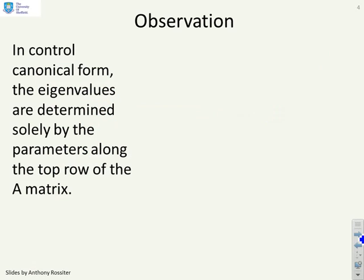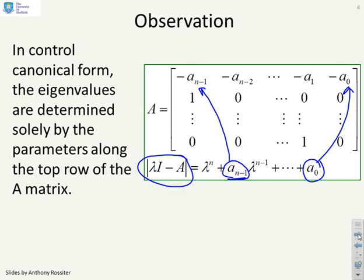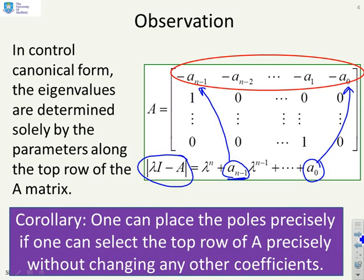An important observation: in control canonical form, the eigenvalues are determined solely by the parameters along the top row of the A matrix. If you compute the determinant of (λI - A), coefficient a_{n-1} comes from the top row, as does a_0, and similarly for all other coefficients. As a corollary, we can place the poles precisely if we are able to select the top row of A precisely — setting those parameters sets the coefficients of the closed-loop pole polynomial.